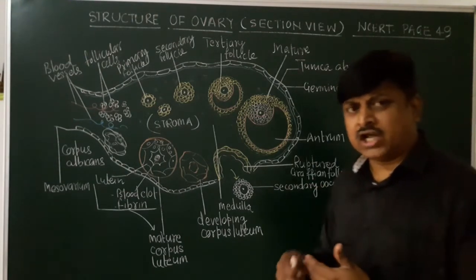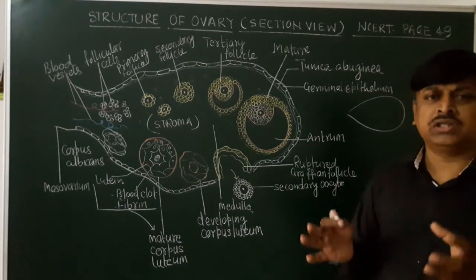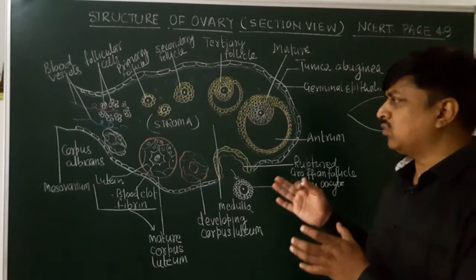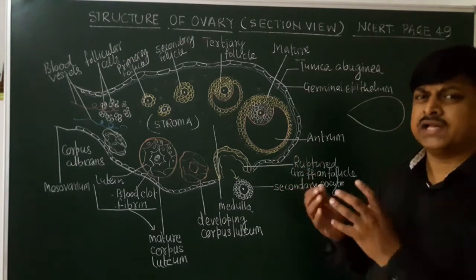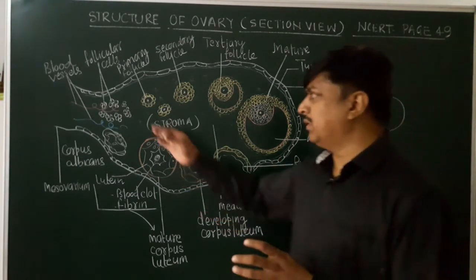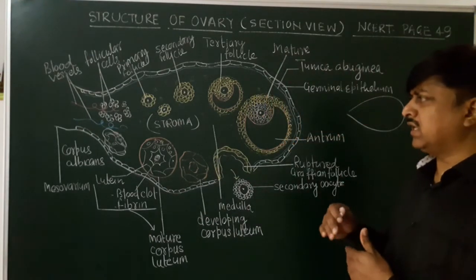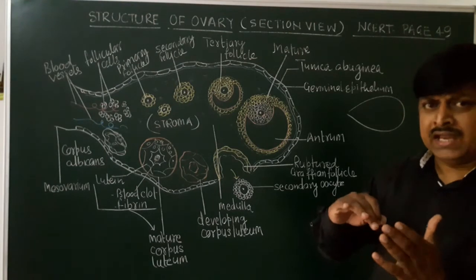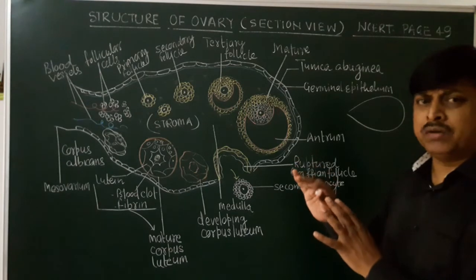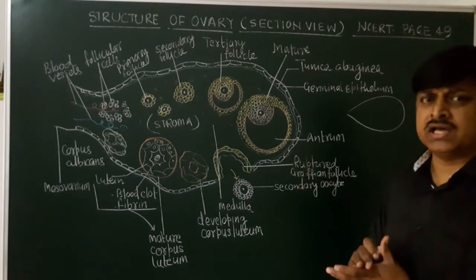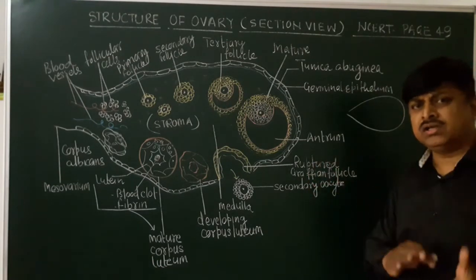During embryonic development, at around twenty to twenty-five weeks, in the female's ovary you can see from six to seven million oogonia are present. After that, gradually, at the time of puberty, no new oogenesis occurs. Whatever oocytes are there, they are formed before puberty. You can see different stages of follicular development inside the ovary.